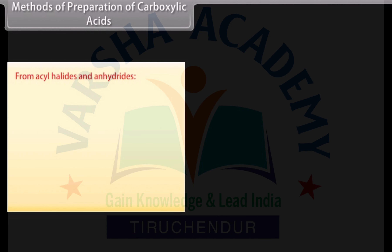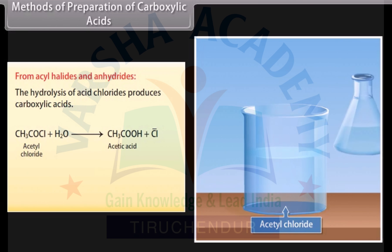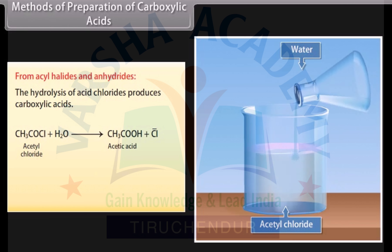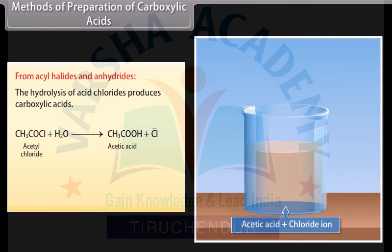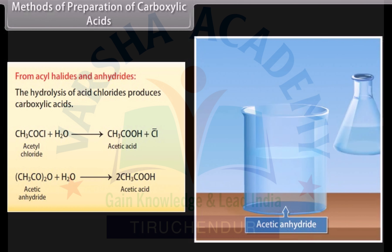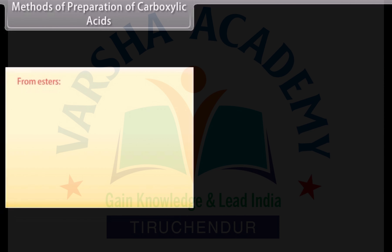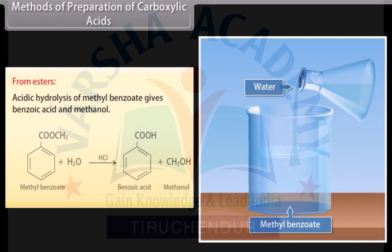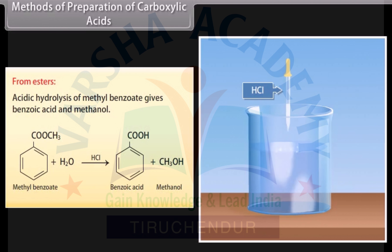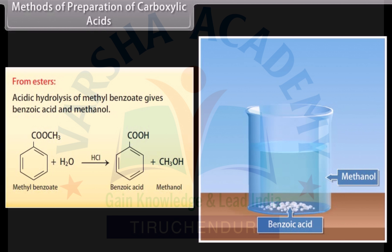From acyl halides and anhydrides: the hydrolysis of acid chlorides produces carboxylic acids. On hydrolysis of acetyl chloride, it produces acetic acid. The hydrolysis of acetic anhydride also produces acetic acid. From esters: acid hydrolysis of methyl benzoate gives benzoic acid and methanol.